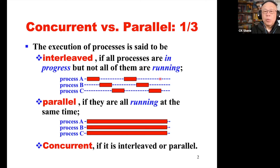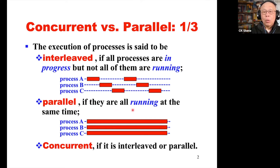Here we use one CPU to run three programs A, B, and C. But if every process has its own CPU, it could run from the very beginning to the very end on that CPU. If they are all running at the same time, we say this execution is a parallel execution.